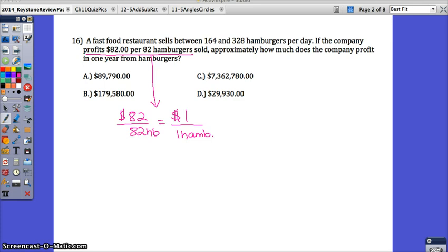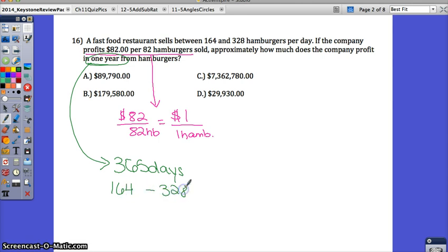If we know that they're going to be selling hamburgers for a whole year, think about how many days that is. One year is 365 days. On each of those days, they're going to sell between 164 hamburgers to 328 hamburgers, because that's per day. Find the lower end. If they sold 164 hamburgers every day of the year, how many hamburgers would they sell? Find the higher end. If they sell 328 hamburgers per day, how much money will they be bringing in? Then we can see which of these answers is within that range.